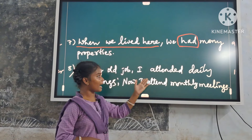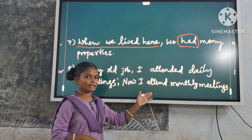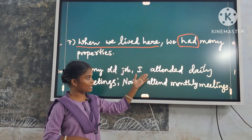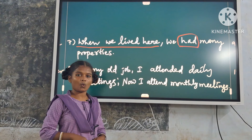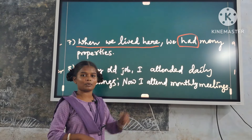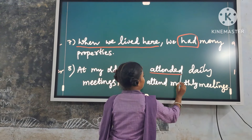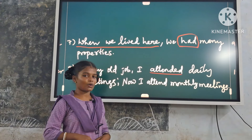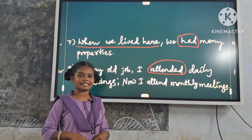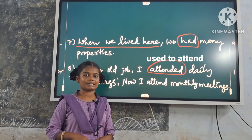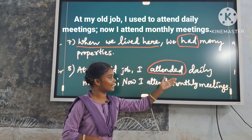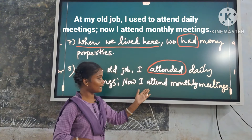Eighth example: 'At my old job, I attended daily meetings. Now, I attend monthly meetings.' Here, we mention the contrast between present and past. So we use only 'used to'. Replace it with 'used to attend'. Answer: 'At my old job, I used to attend daily meetings. Now, I attend monthly meetings.'